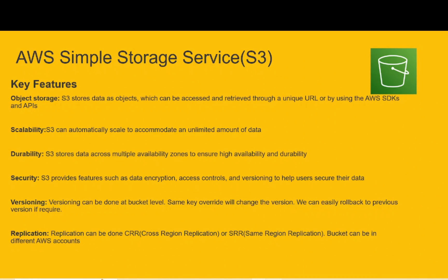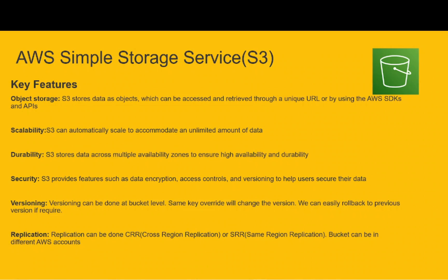Replication can be done via CRR — Cross Region Replication — or SRR — Same Region Replication. The bucket can be in a different AWS account as well. So these are the few key features of AWS S3.